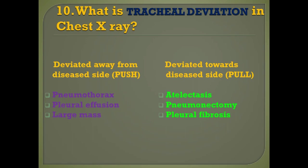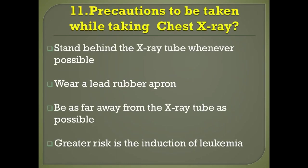Question number ten: what is tracheal deviation in chest X-ray? In certain conditions the trachea will be deviated away from the disease side — we call this a push — for example in pneumothorax, pleural effusion, and large masses. In certain conditions the trachea is deviated towards the disease side — called a pull — for example in atelectasis, pneumonectomy, and pleural fibrosis. Remember, based on this criteria alone you cannot diagnose the condition; you need to correlate with history, examination, and other investigations.